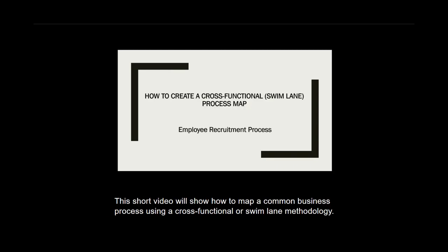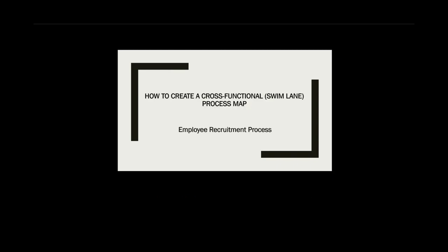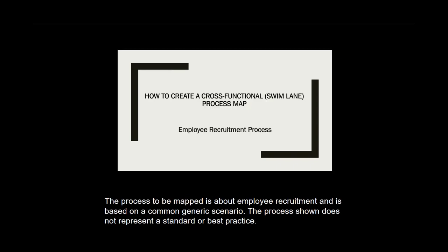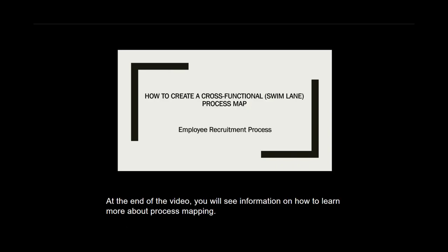This short video will show how to map a common business process using a cross-functional or swim lane methodology. The process to be mapped is about employee recruitment and is based on a common generic scenario. The process shown does not represent a standard or best practice. At the end of the video, you will see information on how to learn more about process mapping.